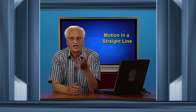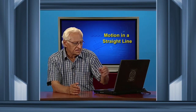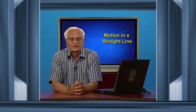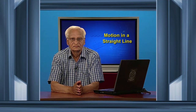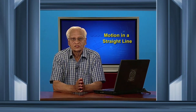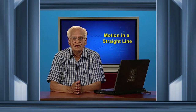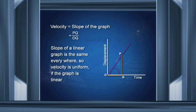Velocity is equal to the slope of the displacement-time graph. The slope of a linear graph is constant — it is the same everywhere. So if the displacement-time graph is linear, the velocity is uniform. We measure the slope by taking the displacement at a certain time divided by the time taken. If the graph is linear, the slope is constant and therefore velocity is uniform.